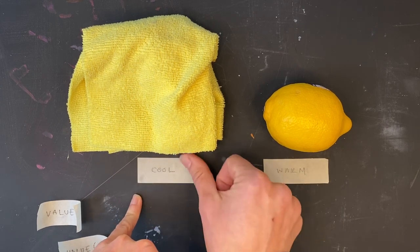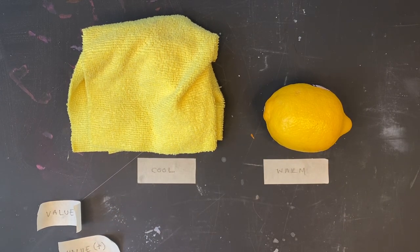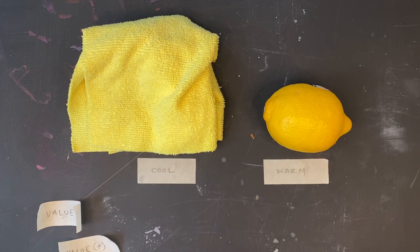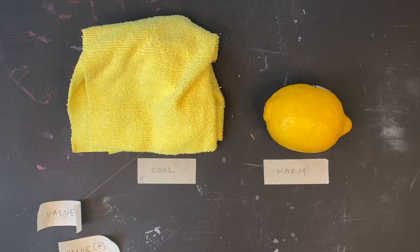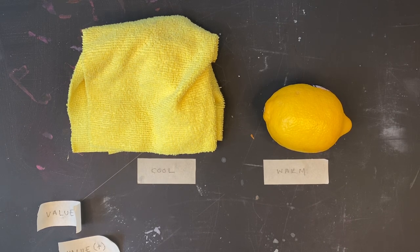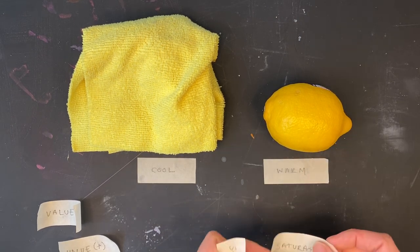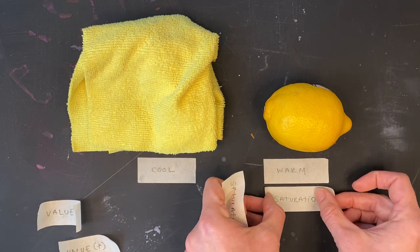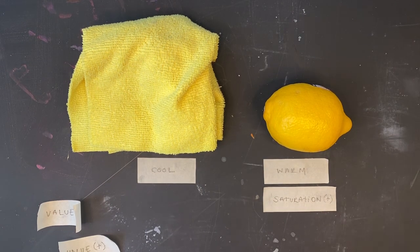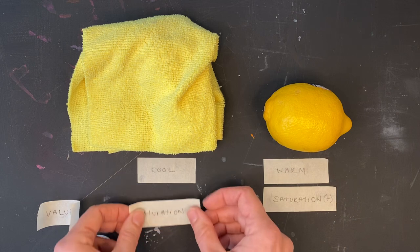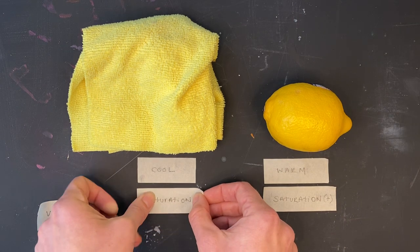Next, I'm going to do saturation. When we talk about saturation, I'm going to say, how intense is the chroma in that color? How intense is that color? So if I look at these two, I've determined that this is the higher saturation. My lemon is a higher saturation. I'm going to pop that piece of tape with the plus underneath. My dish rag is the lower saturation of these colors.